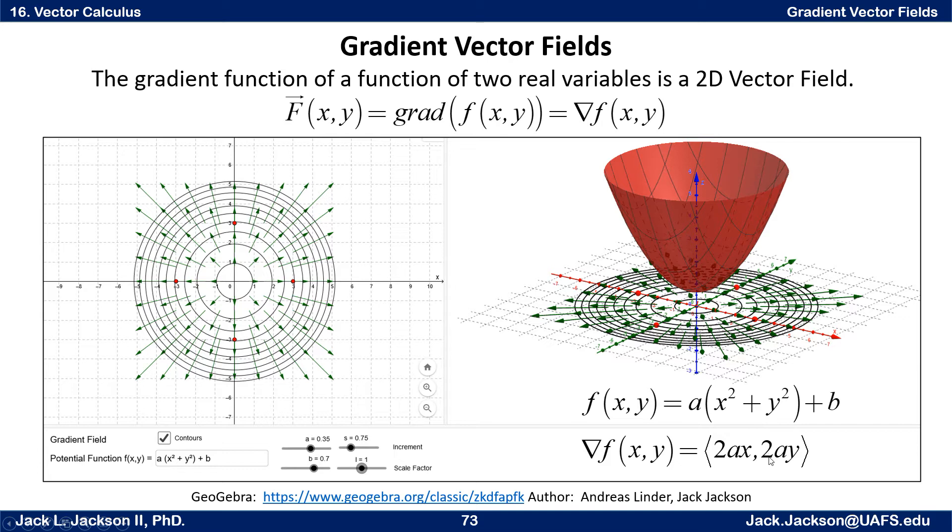Now we can graph that as a vector field. Graph the vectors for particular values of x and y. Remember a is a specific constant, and right at the moment it's 0.35. And we get vectors. You can see those vectors down here in the xy-plane. You can see them below this and you can see them here.